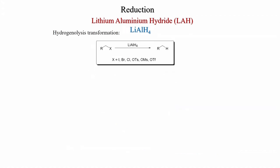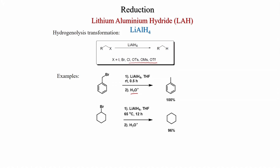Hydrogenolysis: LiAlH4 can convert C–X bonds (X = Br, I, Cl, OTs, OMs, or OTf) to C–H (alkane). Examples: benzyl bromide with LiAlH4/THF followed by acidic workup gives toluene. Cyclohexyl bromide with LiAlH4/THF at 65°C gives cyclohexane in 96% yield. Long-chain alkyl bromides also give alkanes.